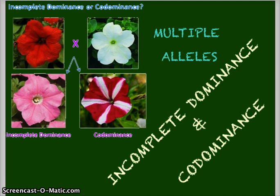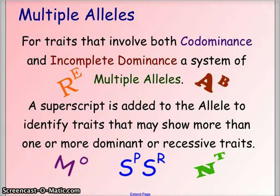Let's look at another situation where we use multiple alleles — in this case, we're going to look primarily at incomplete dominance, but remind ourselves that multiple alleles can be used for both incomplete dominance and codominance. Whenever you have more than one dominant or recessive trait, we use superscripts added to the allele to identify those traits. When we use the capital letter R with a superscript, we know we're dealing with a codominant or incomplete dominant situation.